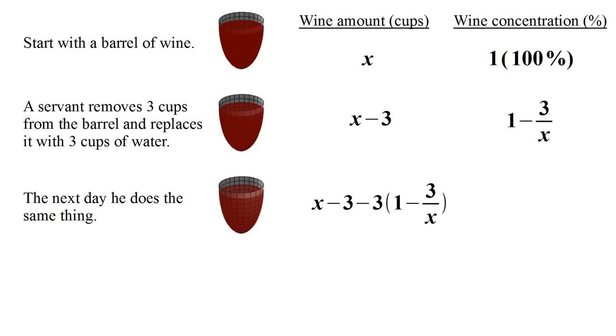So the amount of wine remaining will be X minus three minus three times the diluted wine that he's removing. The concentration of the diluted wine allows us to figure out the exact amount of wine that he's removing as opposed to water. We can now simplify this fraction to figure out the amount of wine remaining in the barrel. This will be X minus six plus nine over X.